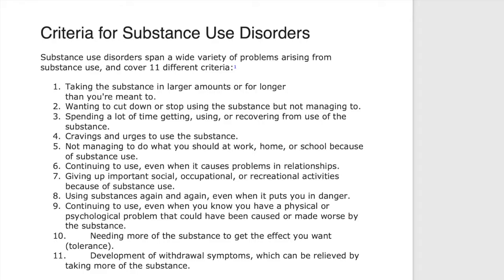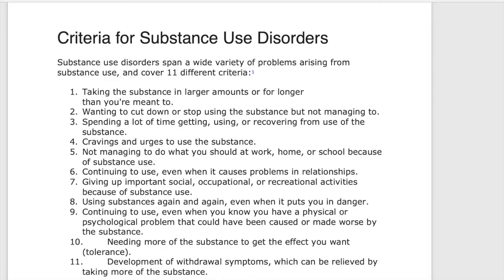I wanted to get some information out there about substance use disorders and the current criteria in the DSM-5 to meet a substance use disorder diagnosis. In one of my previous positions, I worked as an addiction therapist with a population diagnosed with co-occurring disorders, which means somebody is diagnosed with a substance use disorder along with a mental health related disorder.